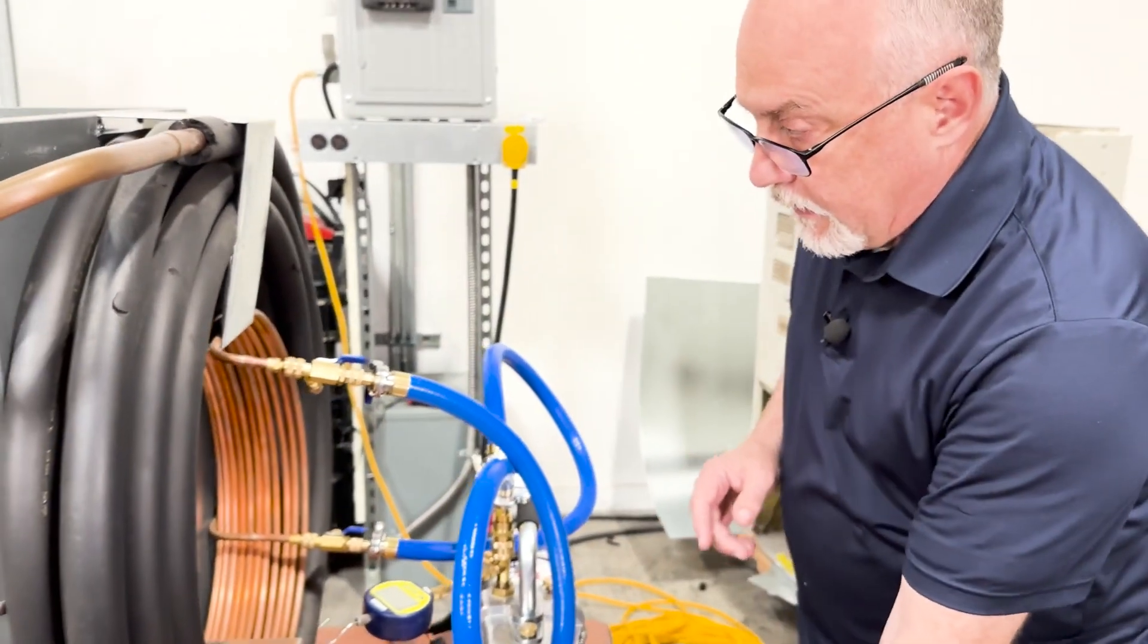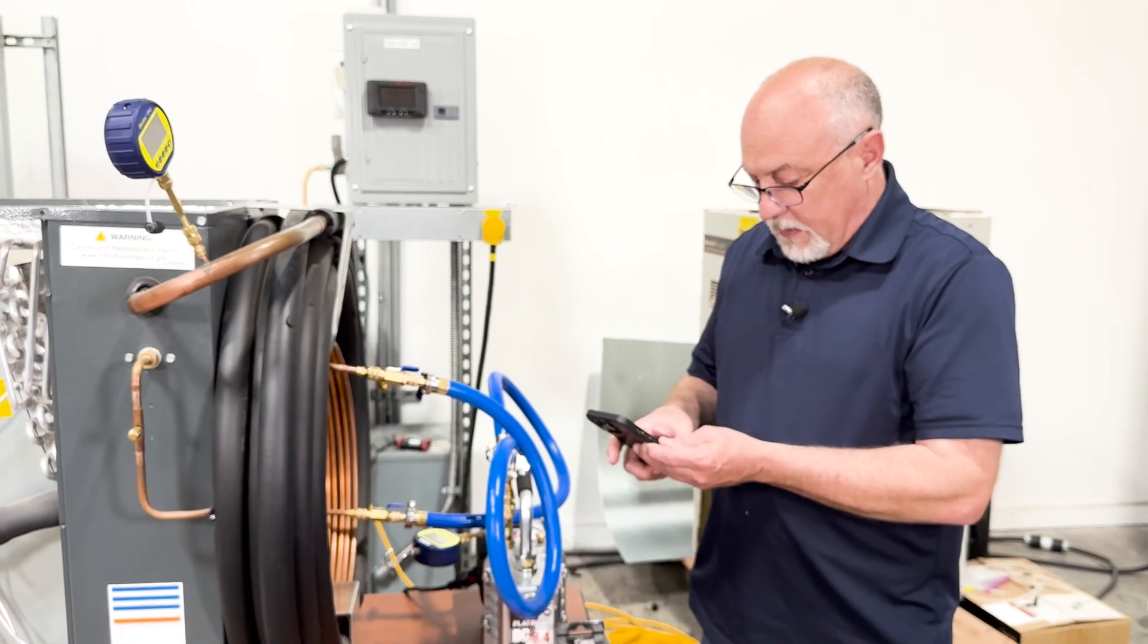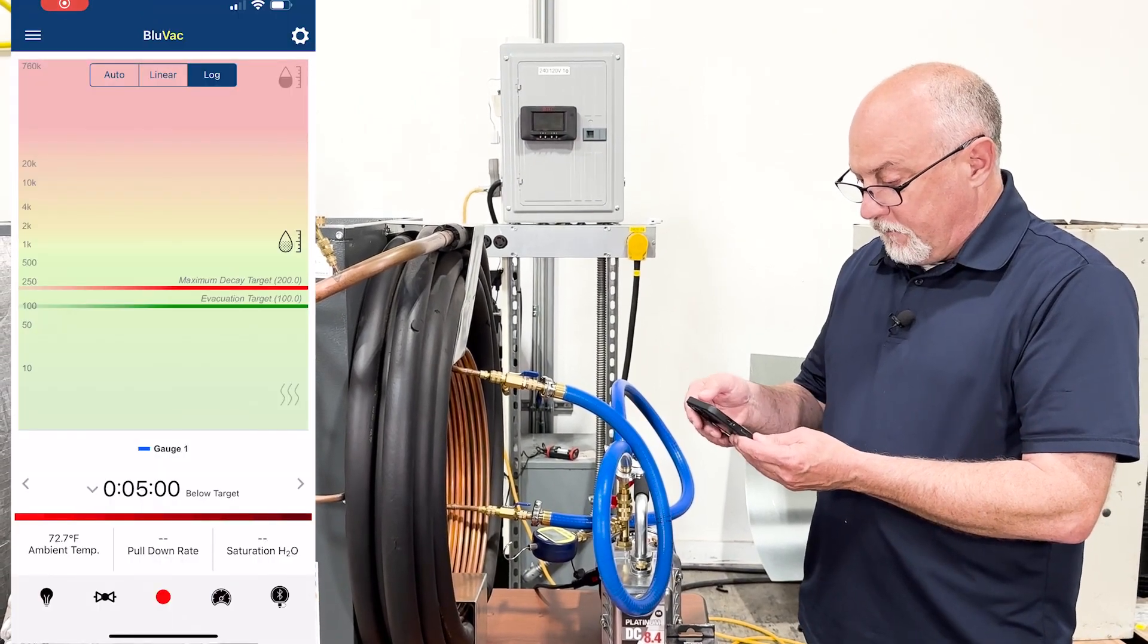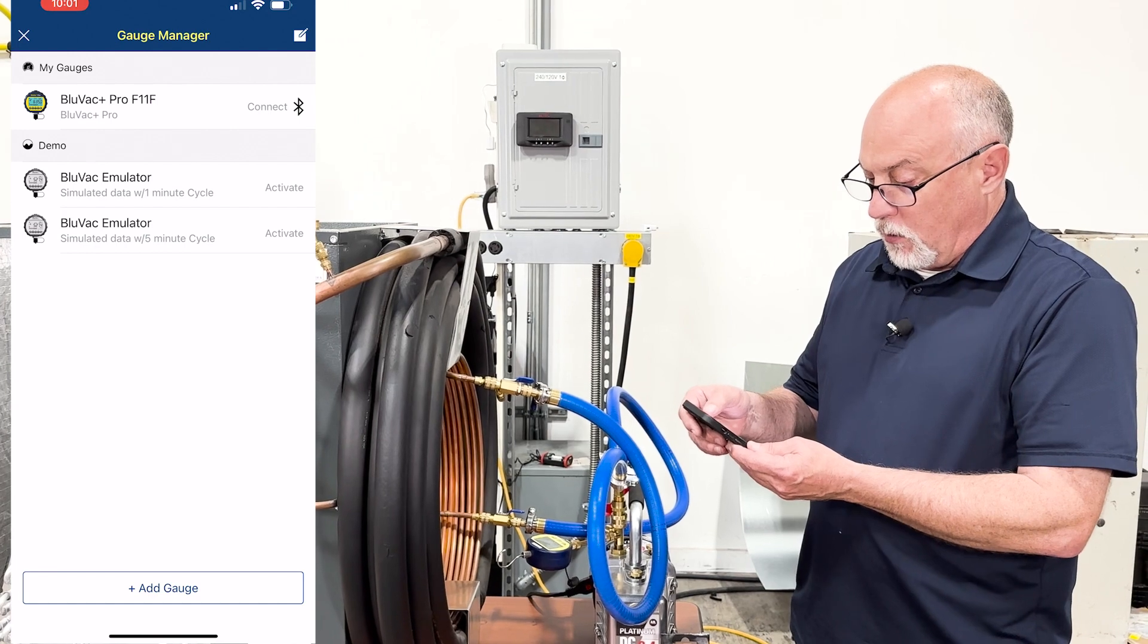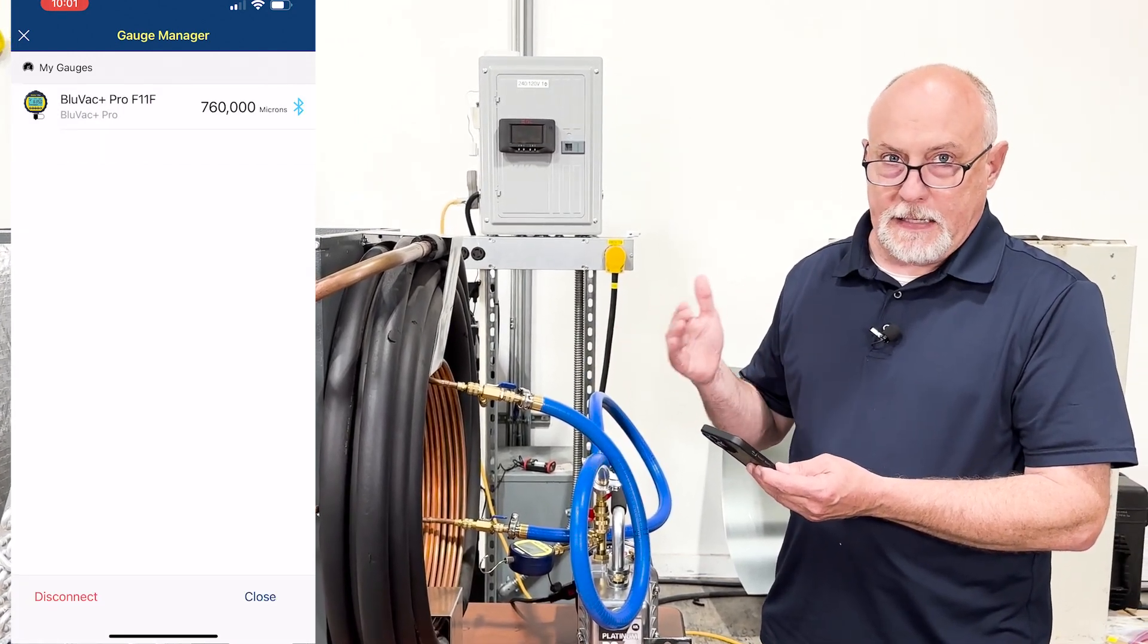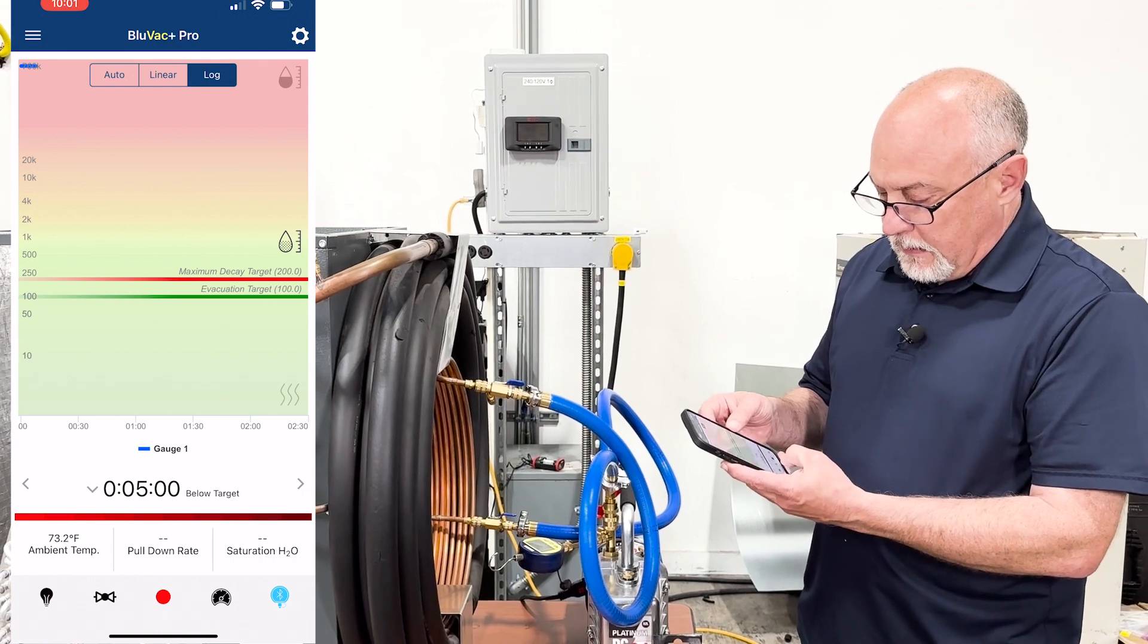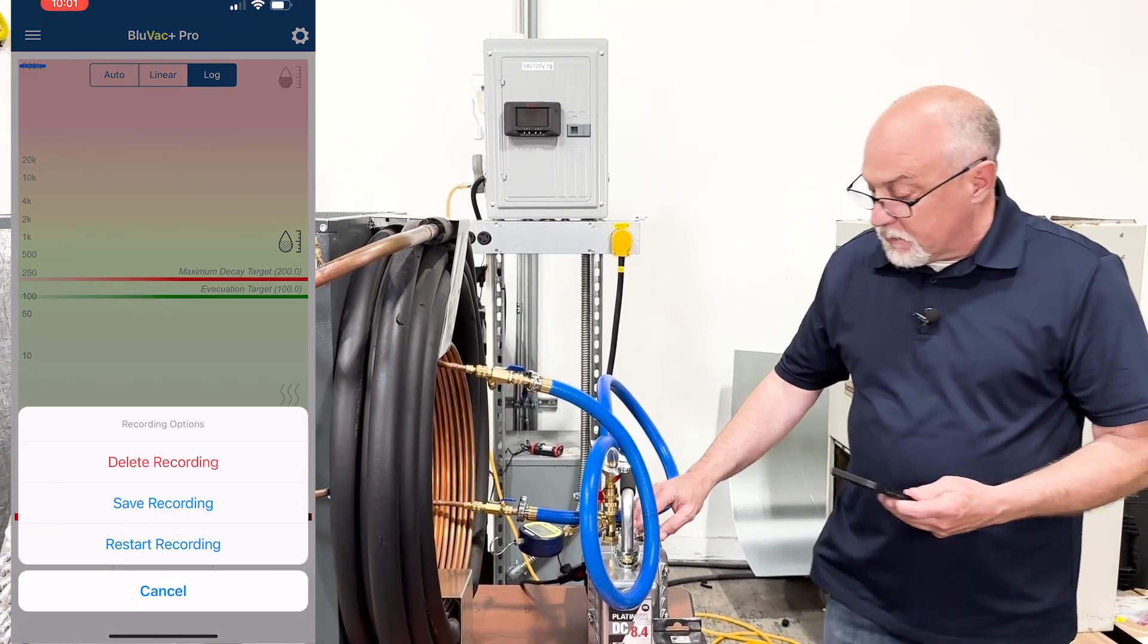So what I'm going to do here is get stream on my app so we can actually see this. I'm going to click on here and select the BlueVac Pro. Now the BlueVac Pro has some decay and leak testing features on there. Once we have this thing connected, you can see we're starting the graph right now. I'm going to restart the graph and start the pump.